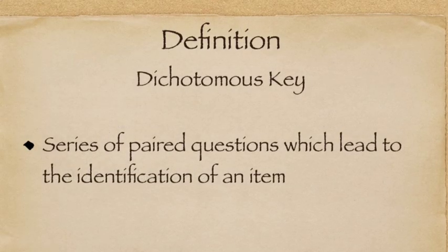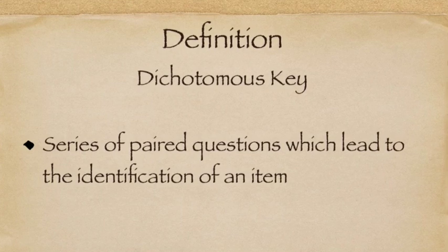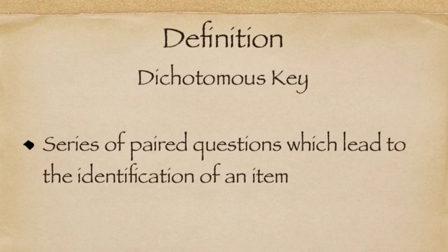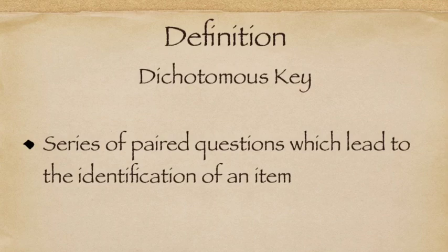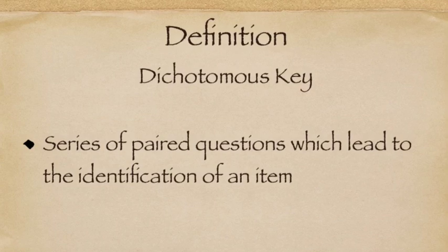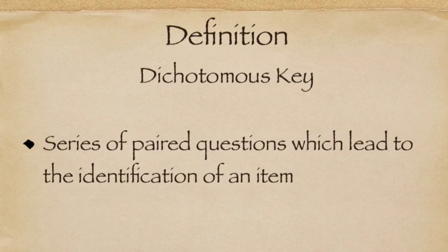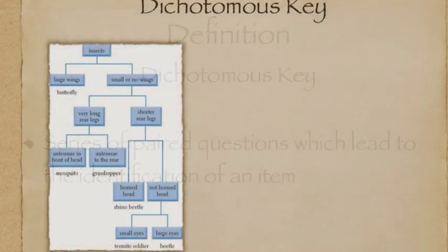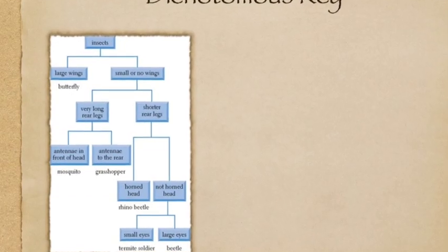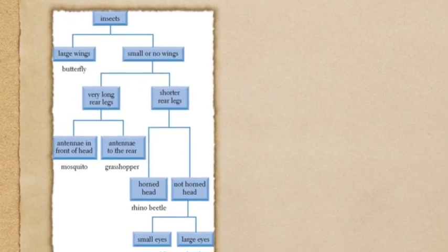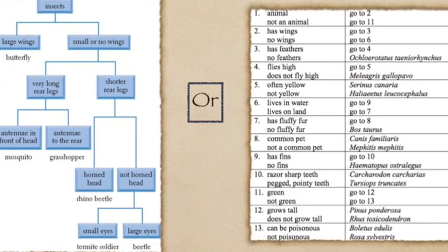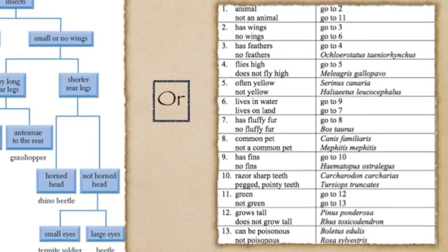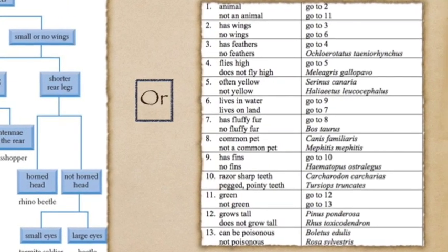So, knowing that information, how does that help us with the meaning of dichotomous? A dichotomous key is a series of paired questions which lead to the identification of an item. It is commonly seen written vertically, branching down from the paired statements, or as a table of paired statements leading to the next set of paired statements.